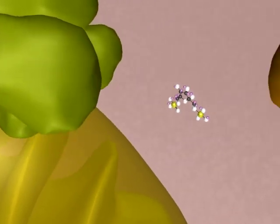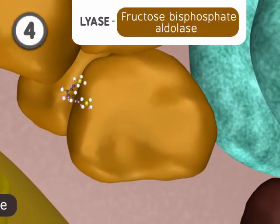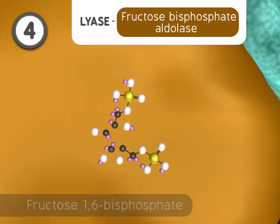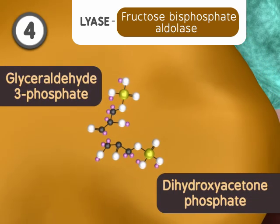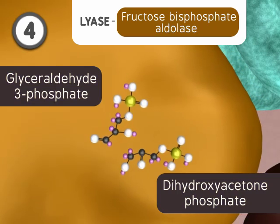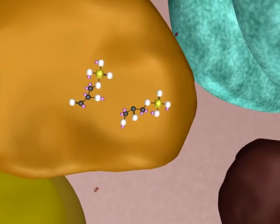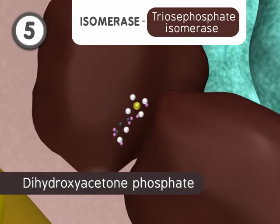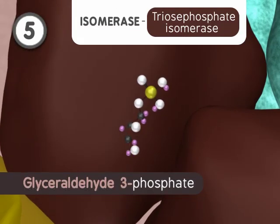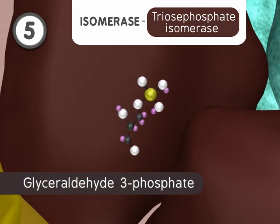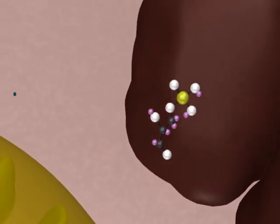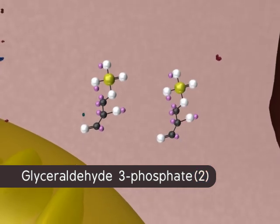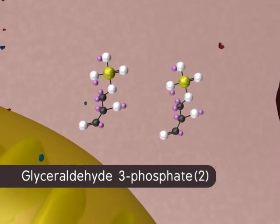In the fourth step of glycolysis, a lyase reaction splits the 6-carbon fructose-1,6-bisphosphate into two 3-carbon sugars: dihydroxyacetone phosphate and glyceraldehyde-3-phosphate. The dihydroxyacetone phosphate is rearranged by another isomerase to form a second glyceraldehyde-3-phosphate. At this point in glycolysis, glucose has been metabolized into two glyceraldehyde-3-phosphates and two ATPs have been consumed.